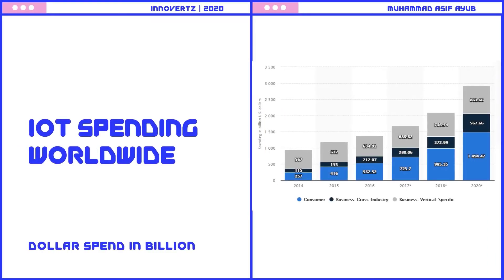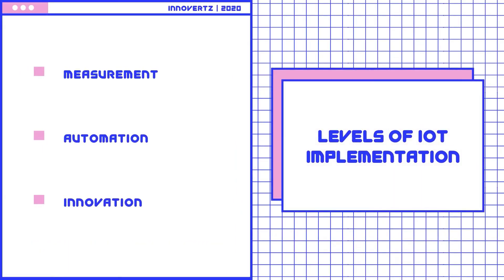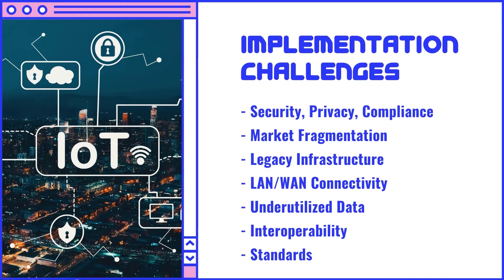According to Statista, billions of dollars are spent on IoT every year. IoT is implemented in three steps: wellness measurement, automation, and innovation. Implementation challenges include security, privacy, compliance, market fragmentation, legacy infrastructure, LAN/WAN connectivity, underutilized data, interoperability standards, and hazards.